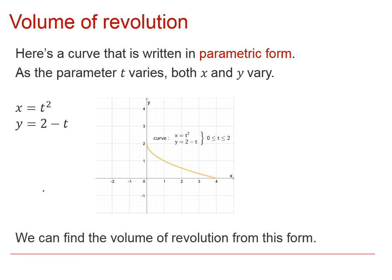We could change to Cartesian coordinates and then do it the way that we've been doing before. But actually, it's often easier to just work with the parametric form and do the volume of revolution straight from there.